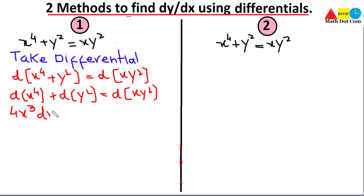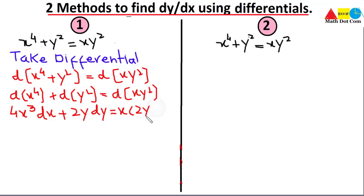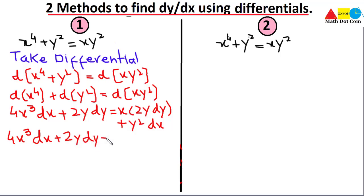We must write dx with all terms since we are finding the differential. So d(y²) = 2y dy. On the right-hand side, x and y² are multiplied, so we apply the product rule: the first function x stays, times the differential of y² which is 2y dy, plus y² stays times the differential of x which is 1·dx. This gives us: 4x³ dx + 2y dy = 2xy dy + y² dx.